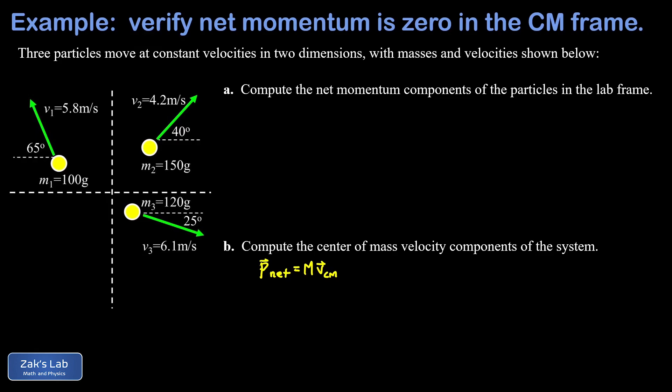The center of mass velocity is zero if we switch into the center of mass reference frame, and that means the net momentum should be zero in the center of mass frame as well. This is the key property that makes the center of mass frame useful. So in this problem, we're going to test this property out by explicitly transforming the velocities of three particles from the lab frame into the center of mass frame, and then numerically verify that the sum of the momenta is actually zero in the center of mass frame.